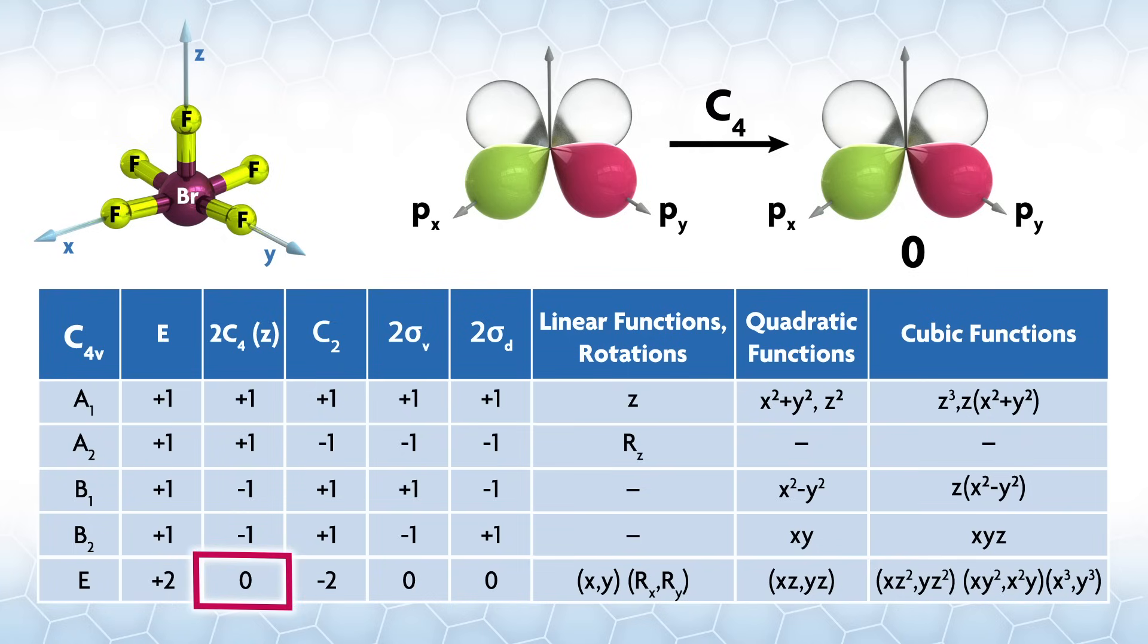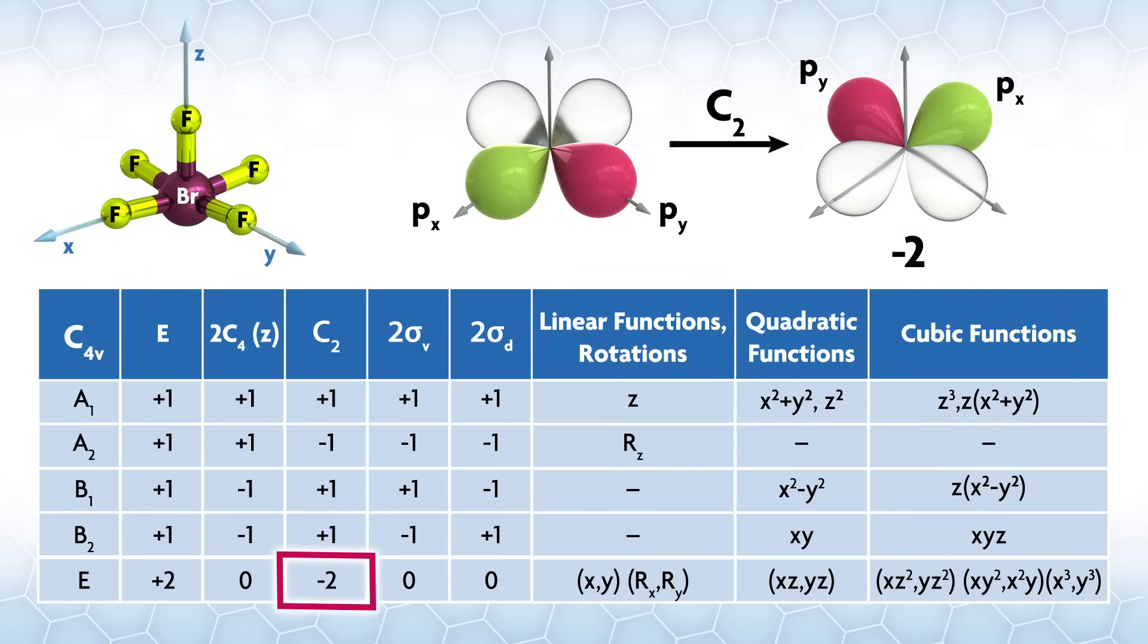There are two C4s. For any functions, operations in the same class will do the same thing to the functions. In other words, it doesn't matter if we look at the C1^4 or the C3^4 along the z-axis. During this operation, both functions move into the other, px moves into py, and vice versa. When this happens, we give those functions a zero. The next operation is C2, which leaves the p orbitals where they are, but inverts the phases. Because of the phase change, we give each orbital negative one, so negative two overall.